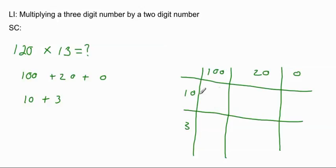So, in the grid method, you basically have partitioned the three-digit number along the top and the two-digit number along the bottom. And we just work them out.